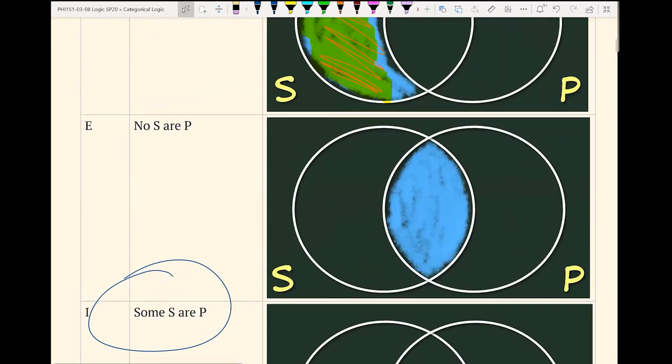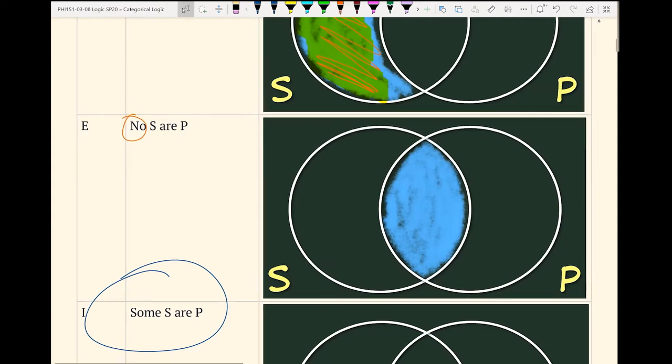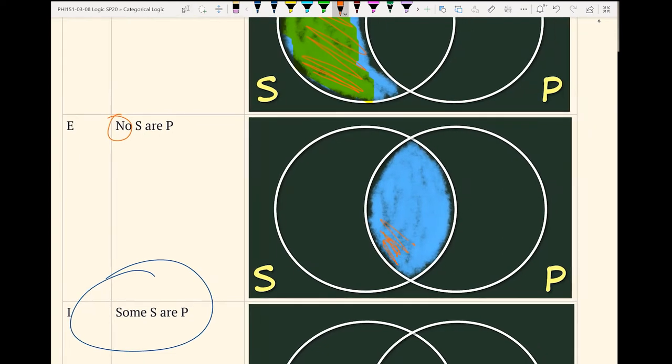And so moving on to the next one, mood E. We have no S are P. So we flip it. And so how do we represent that? We're going to use shading to show that there's nothing in a particular region. And then we're just going to shade in the overlap between S and P.